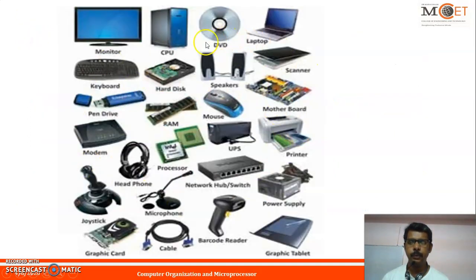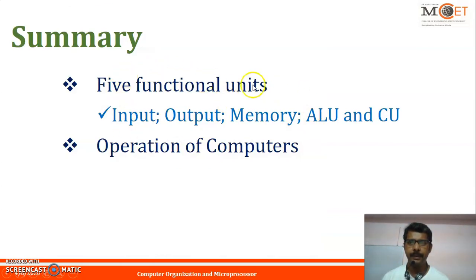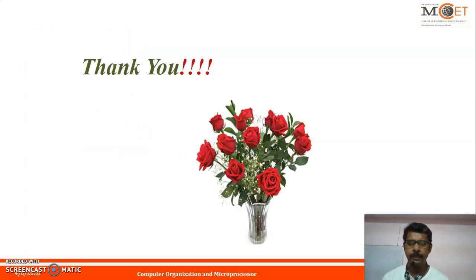As an activity, please list the input devices, output devices, ALU, control unit, and types of memory. In summary, this video discussed the five functional units — input, output, memory, ALU, and control unit — and the operations of a computer. This is a fundamental topic. If you have any doubts, please contact me through my WhatsApp number or email. Thank you, friends.